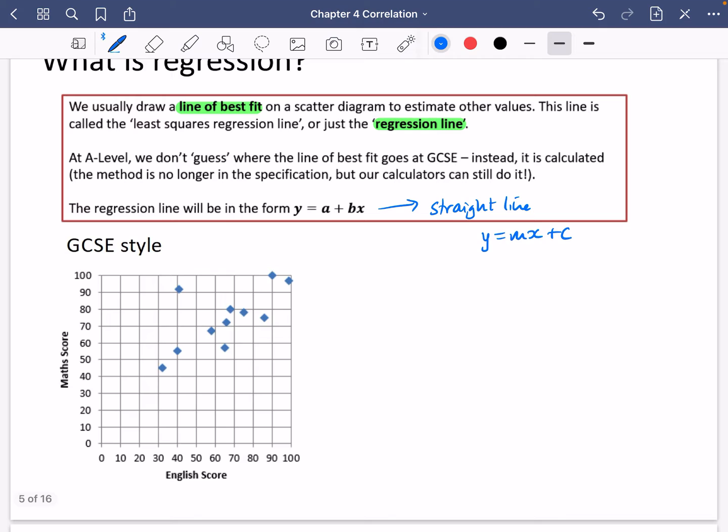GCSE style, what we would have done is we would have tried to draw a line of best fit. So this is my maths and English score one I used earlier. We probably would have tried to draw it like this going through them. We tried to have roughly the same number of points on each side. Different people would have had different lines of best fit. We're going to actually now have an official line of best fit.